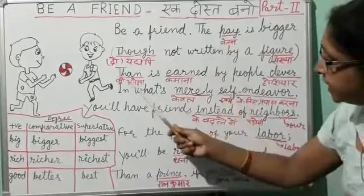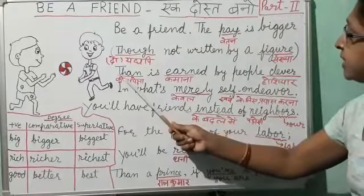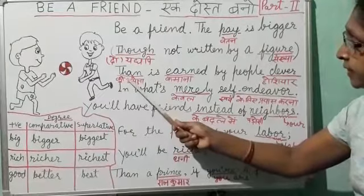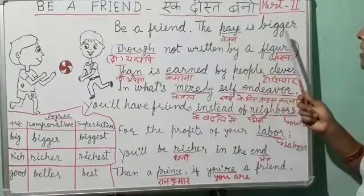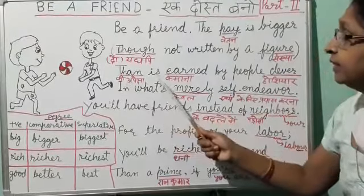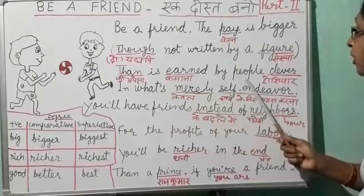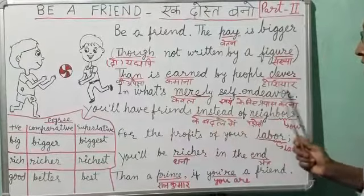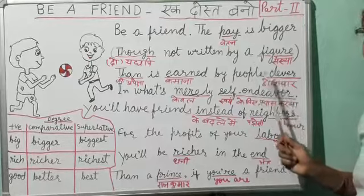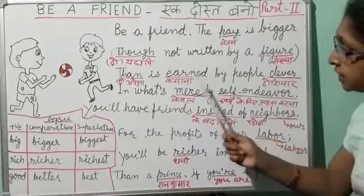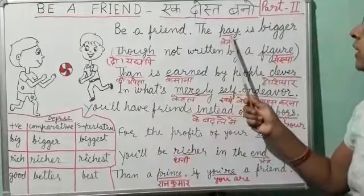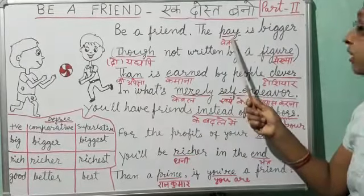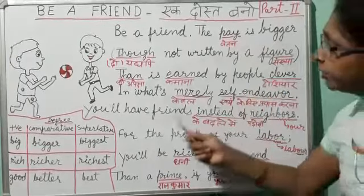That is earned by people clever. Is sentence ko is sentence ke saat joda gaya hai. The pay is bigger than is earned by people clever. Ek hoshyaar aadmi, ek skillful aadmi, kari kushal aadmi, jitna kamaata hai, uski apeksha ye payment, ye vetan bada hai — 'is bigger than'.